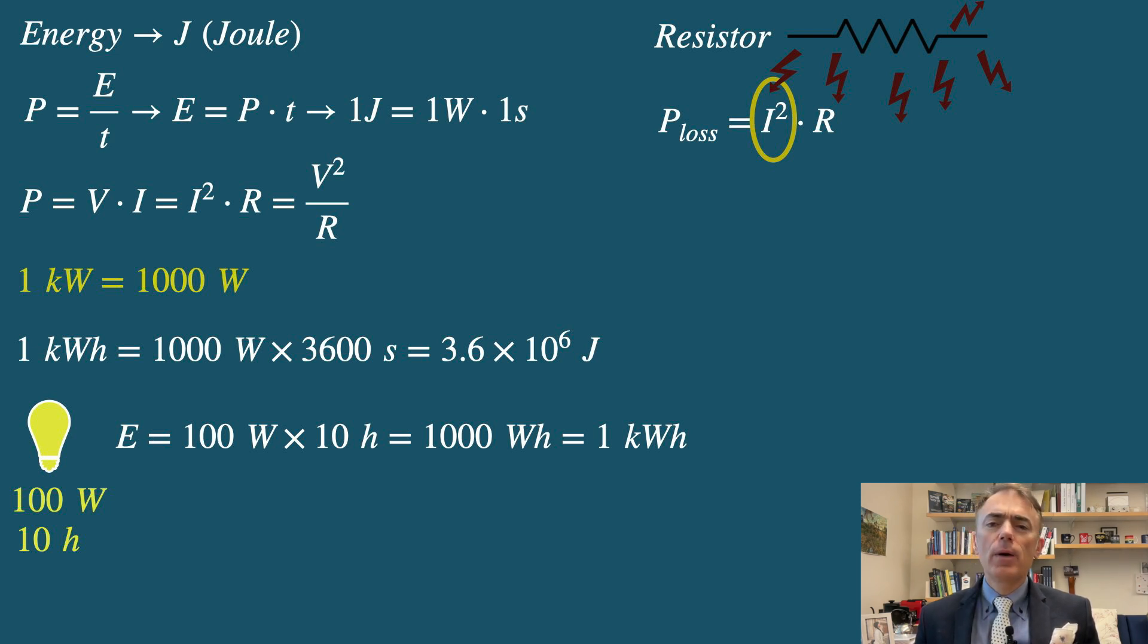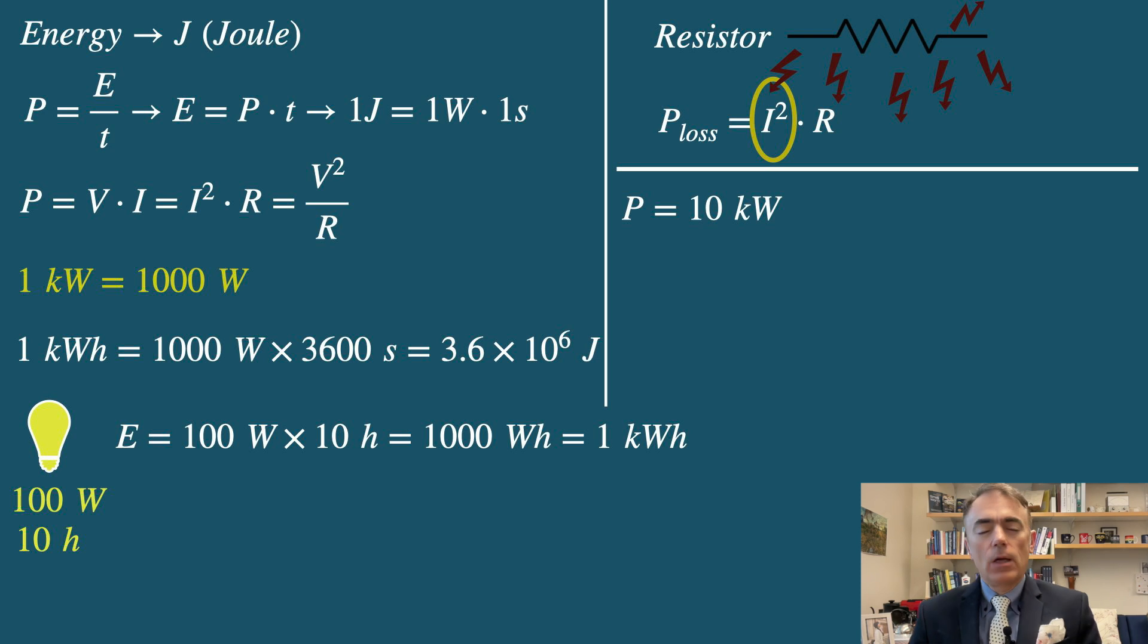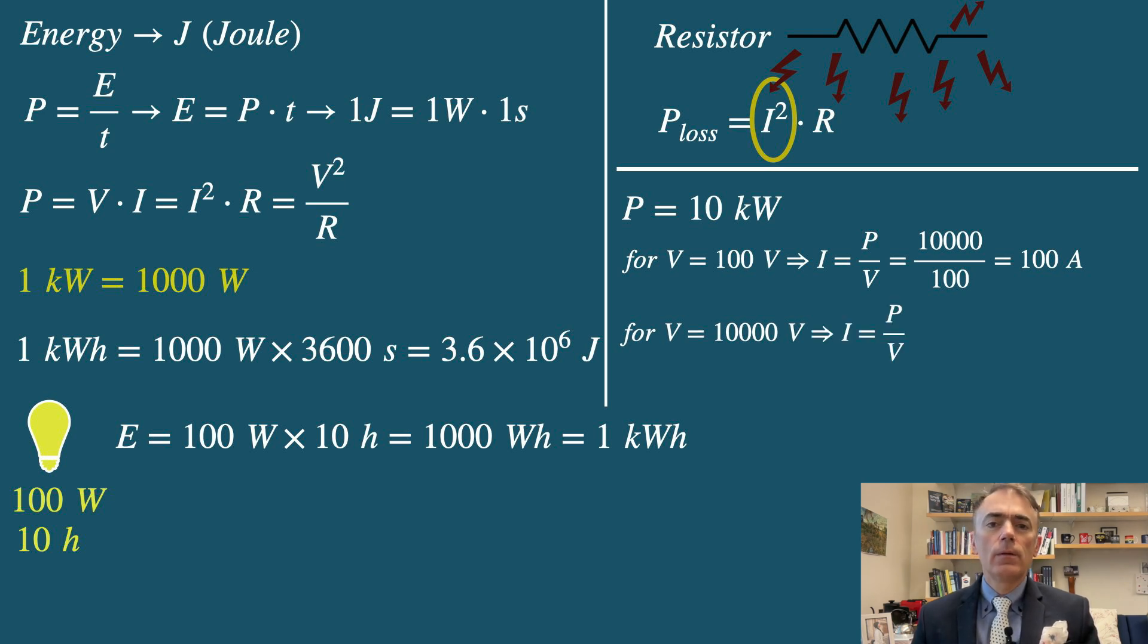But for a given power level, increasing the voltage allows us to reduce the current, thus minimizing power loss. For example, to transmit 10,000 watts, 10 kilowatts, using low voltage, 100 volts, I equals P over V equals 10,000 over 100, equals 100 amps. Using high voltage, 10,000 volts, current equals P over V, 10,000 over 10,000 is 1 amp.